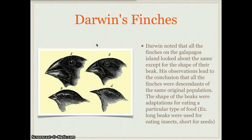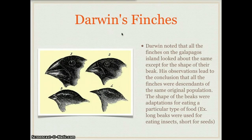Darwin's finches: Darwin noticed that all the finches on the Galapagos Islands looked about the same, except for the shape of their beak, as you can see in this picture. His observations led to the conclusion that all the finches were descendants of the same original population. The shape of the beaks were adaptations for eating a particular type of food — long beaks were used for eating insects, and short beaks were used for eating seeds because they're better at crushing those shells.